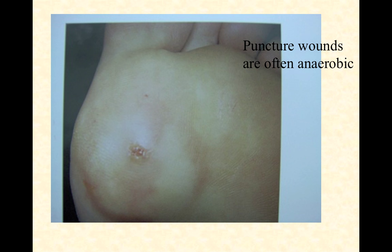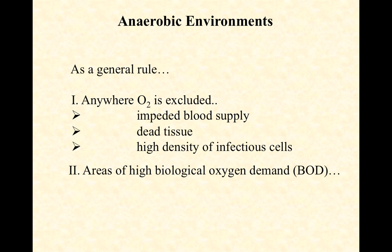Puncture wounds are often anaerobic. Your mom may have told you that if you step on a rusty nail you can get tetanus — I don't think rust has anything to do with it, but a puncture wound of any kind, whether from a broken jar, a sharp rock, a knife, or a nail — particularly if those items have been contaminated with soil — poses a risk. Clostridium tetani, the gram-positive spore-forming strict anaerobe that causes tetanus, lives in the soil. Anything that can carry it from soil into deeper tissues, away from vasculature and the surface, poses a significant threat of causing tetanus. The deeper a wound goes, the less vasculature there is and therefore the less oxygen.